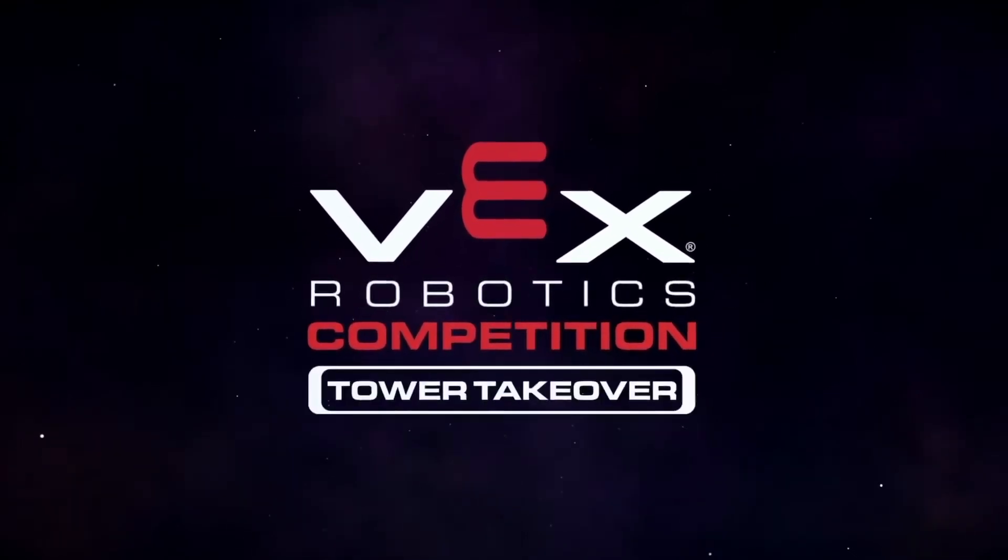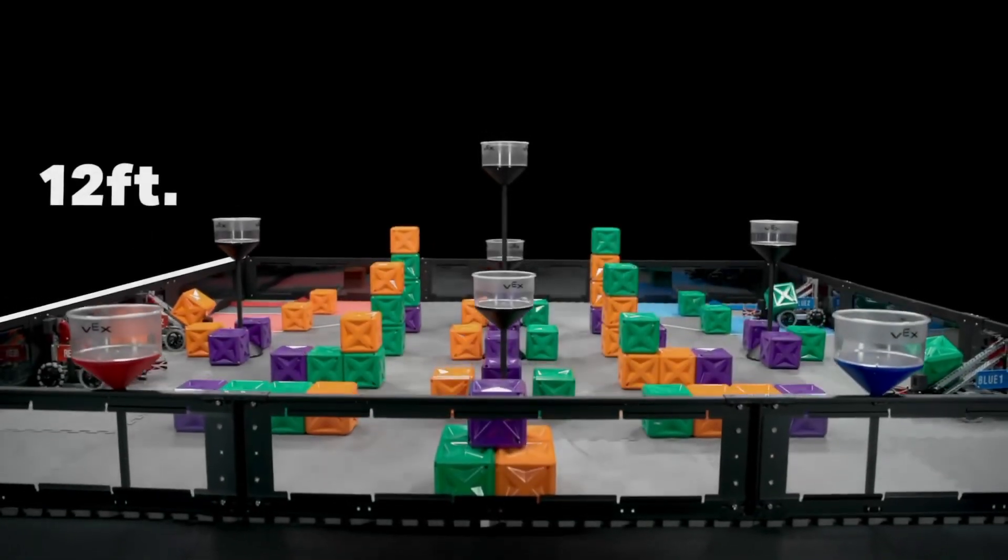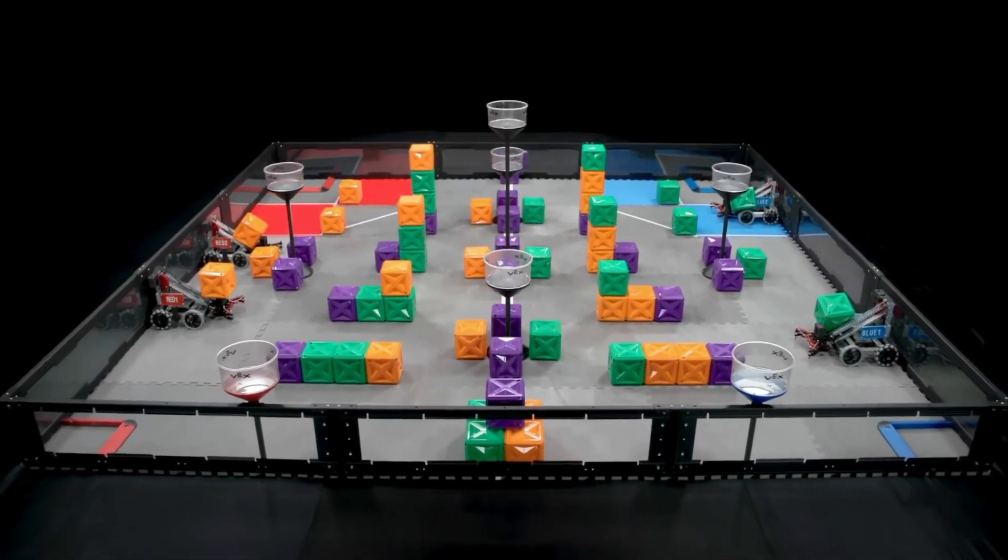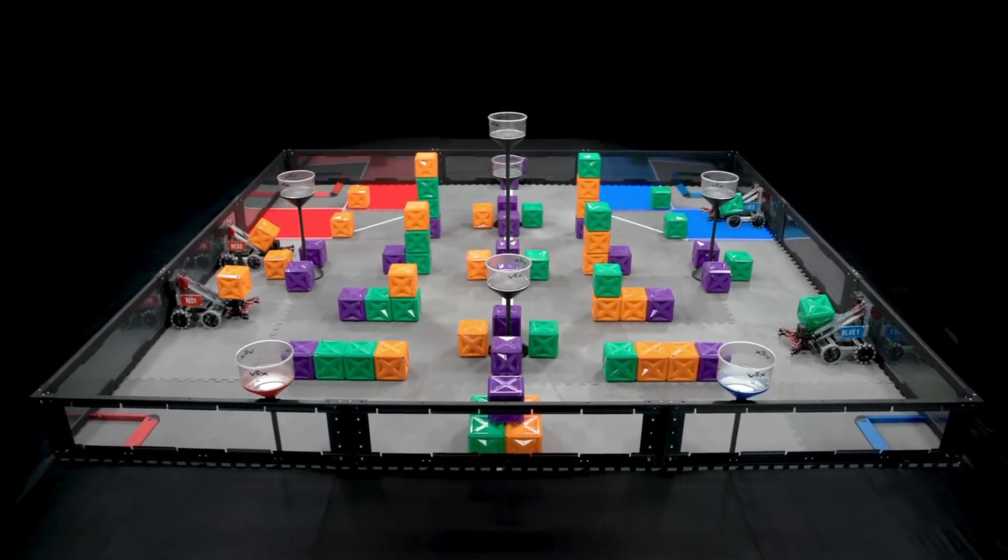Competition Tower Takeover. Tower Takeover is played on a 12-foot by 12-foot field by two alliances, one red and one blue, made up of two teams each.